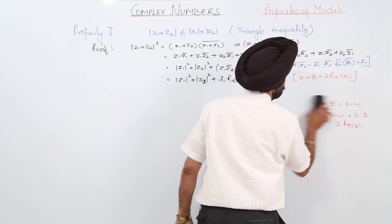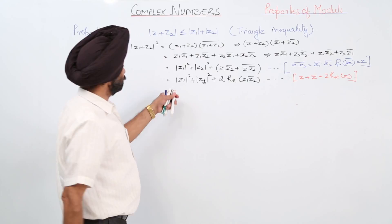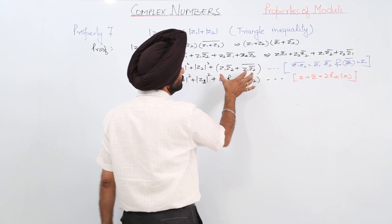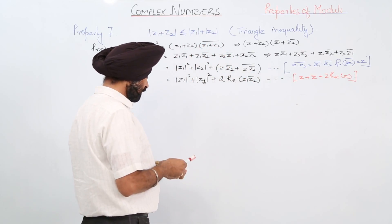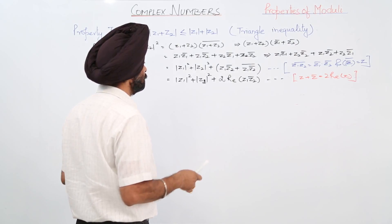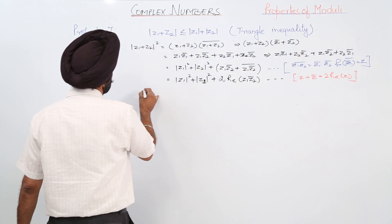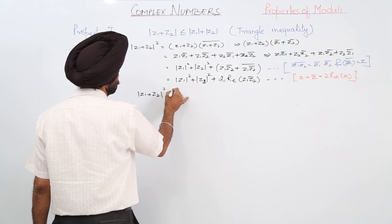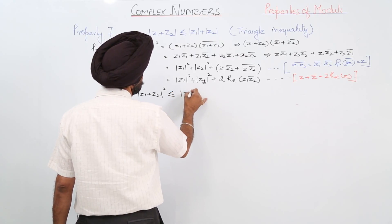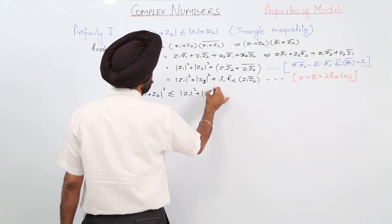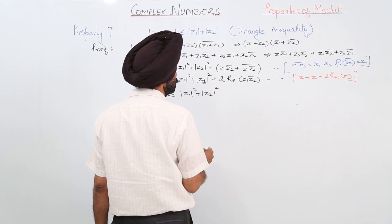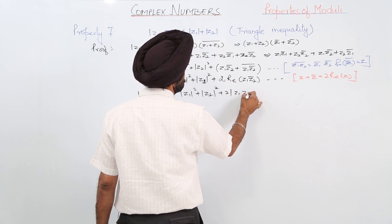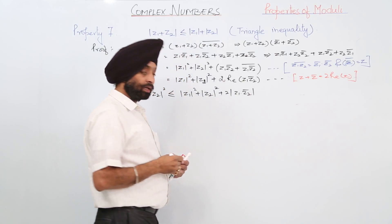So |z1 + z2|² = |z1|² + |z2|² + 2·Re(z1·conjugate(z2)). Now we can write |z1 + z2|² ≤ |z1|² + |z2|² + 2|z1||z2|. We use an inequality here because the real part of a complex number is always less than or equal to its modulus — this is property 6.